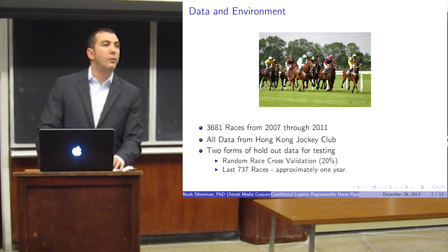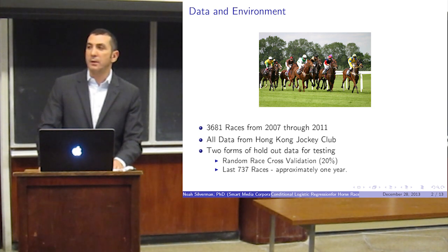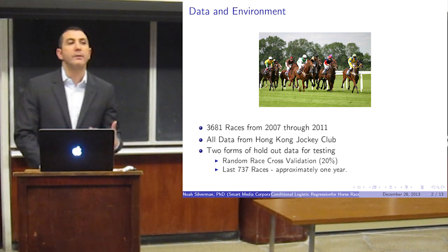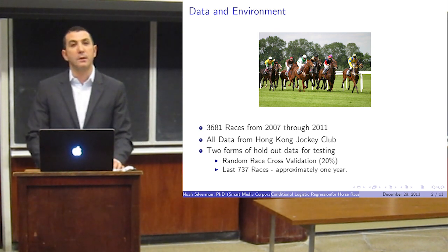I experimented with two forms of holdout data for testing: a random cross validation of 20%, and the last 737 races of the series, which is approximately the year 2012.